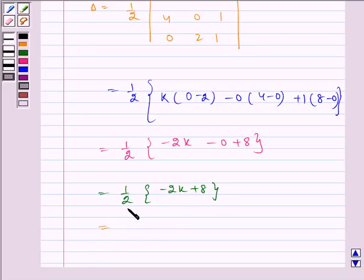Which is equal to taking 2 common, 2 and 2 gets cancelled so we are left with 4 minus k.